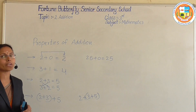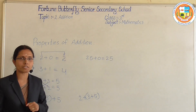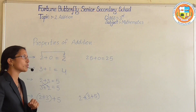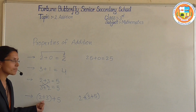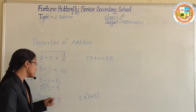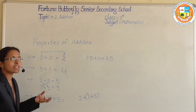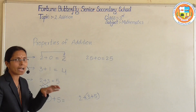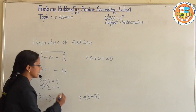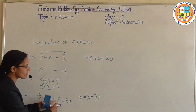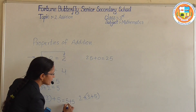The last one is grouping property. When we take more than 2 numbers to add, for example, (2 plus 3) plus 5 — the numbers in brackets are added first. So first I add 2 plus 3, which is 5, plus 5, how much? 10.